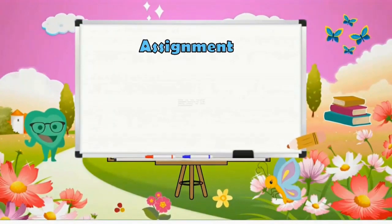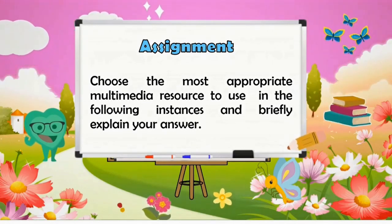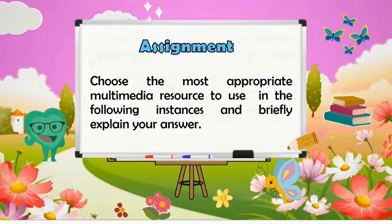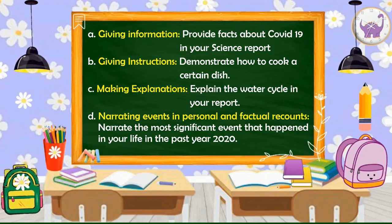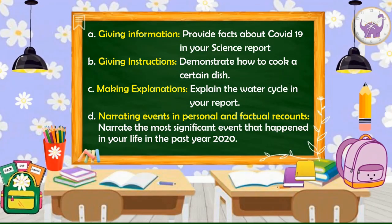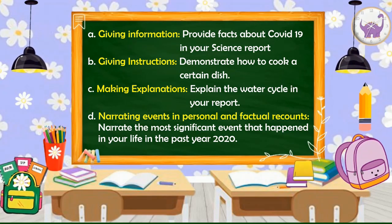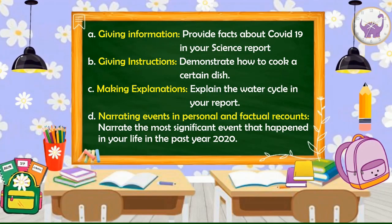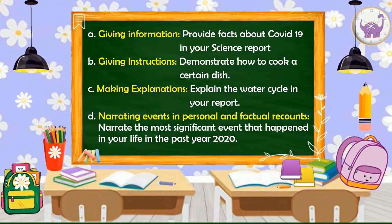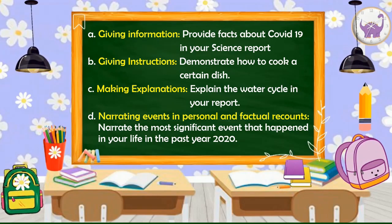For your assignment, choose the most appropriate multimedia resource to use in the following instances and briefly explain your answer. Letter A — giving information: Provide facts about COVID-19 in your science report. Letter B — giving instructions: Demonstrate how to cook a certain dish. Letter C — making explanations: Explain the water cycle in your report. Letter D — narrating events in personal and factual recounts: Narrate the most significant event that happened in your life in the past year 2020. Write your answers in your activity notebook.